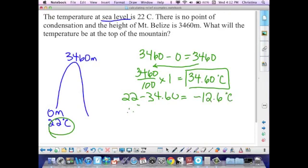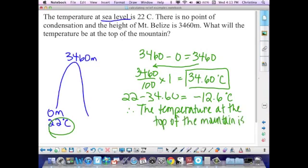That's our answer. Therefore, the temperature at the top of the mountain is negative 12.6 degrees Celsius. Very easy and straightforward. Good luck.